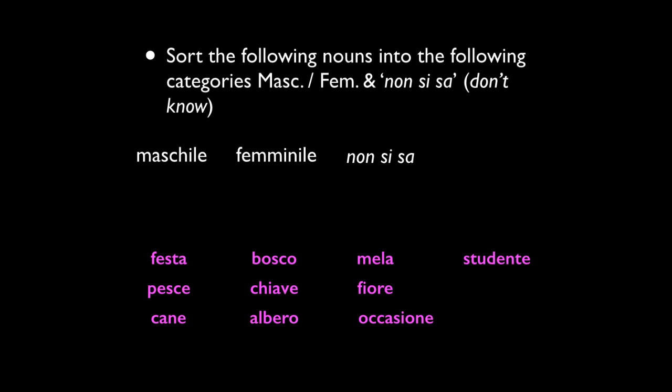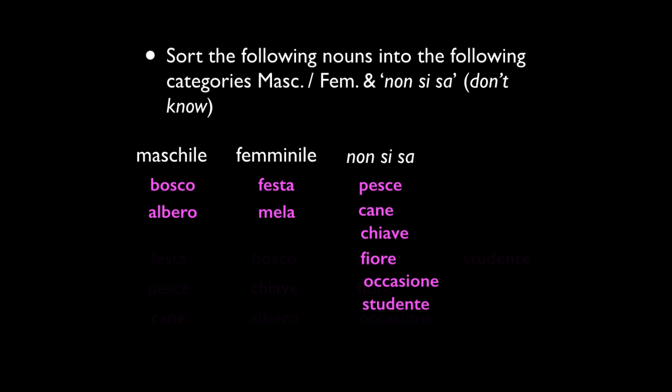So let's go on to the exercises. This first one is to sort the nouns into the categories of masculine, feminine, or non si sa — one doesn't know. So: maschile, femminile, e non si sa. At this point, you're going to pause the video and write the words down, remembering which word endings go with which gender. And we're back. Hopefully this is the response that you got — this is a pretty straightforward early beginning exercise. So hopefully that's what you have. You've got two masculine, two feminine words, and then a bunch of non si sa, because they all end in -e.